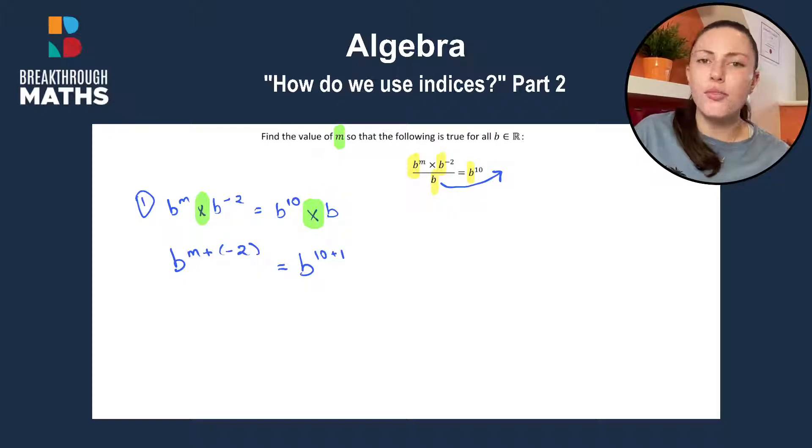And now you might be saying, Jennifer, where did that 1 come from? Well, we just have B here, which means it's automatically B to the power of 1. So anything by itself just means it's to the power of 1. So the number 3 means it's 3 to the power of 1. It's the same thing. It's just multiplying it by 1.